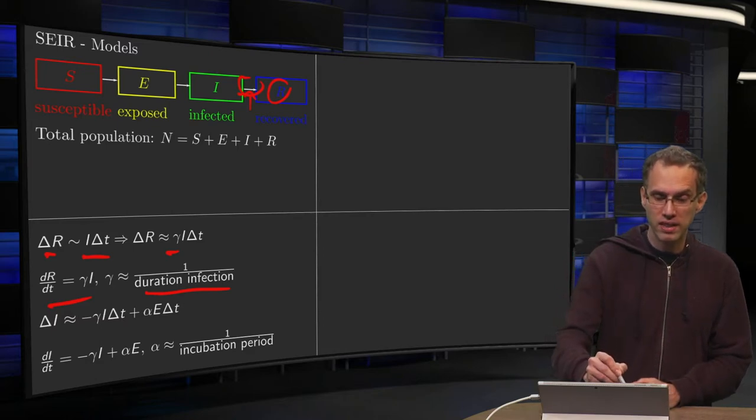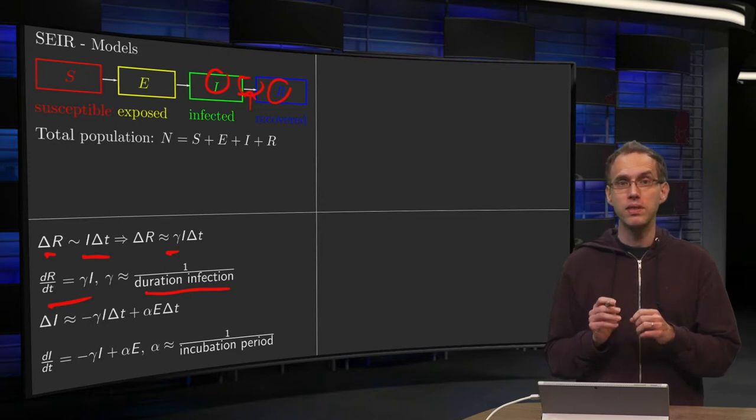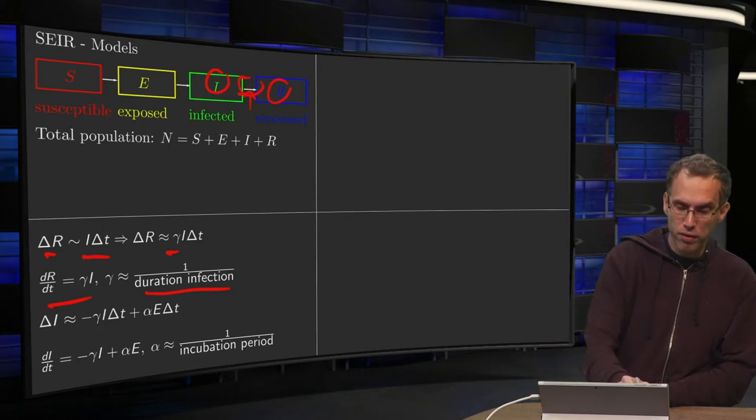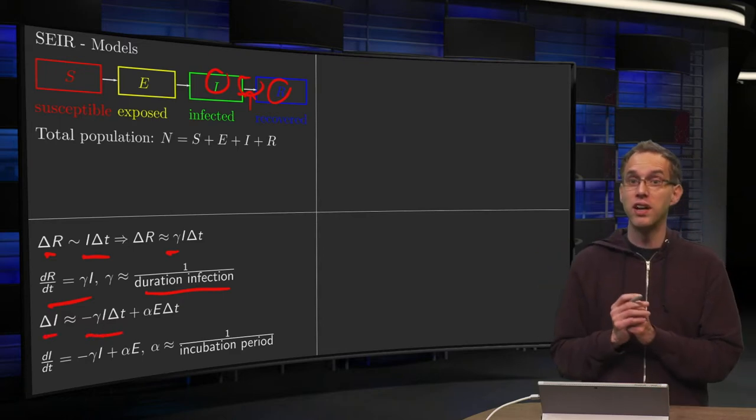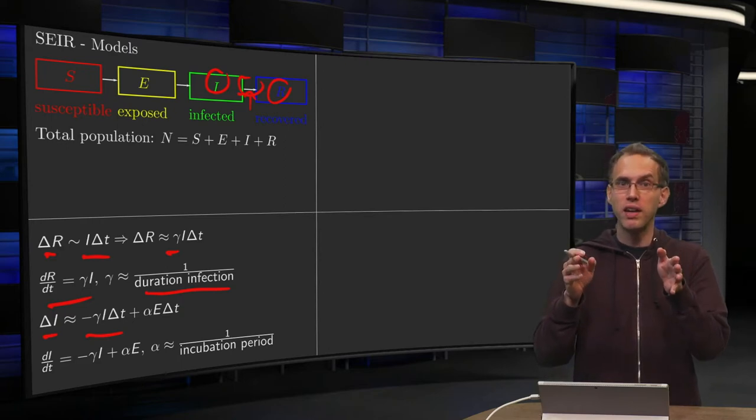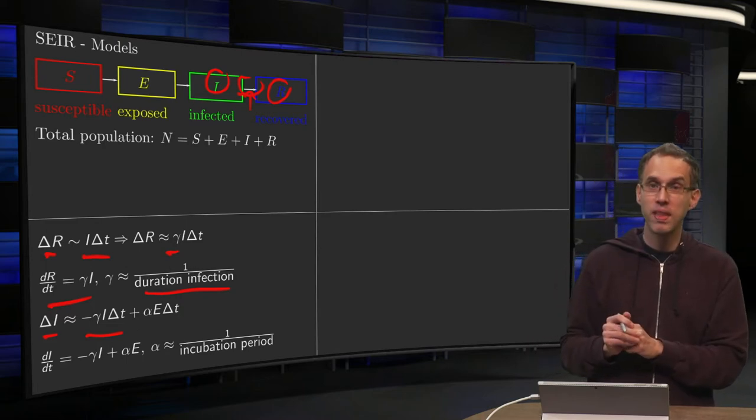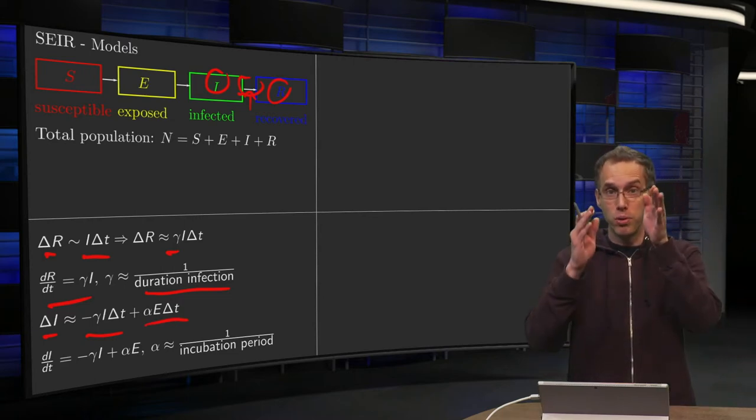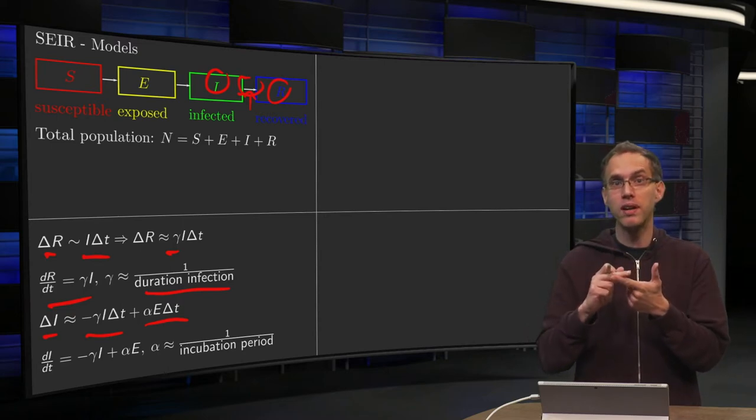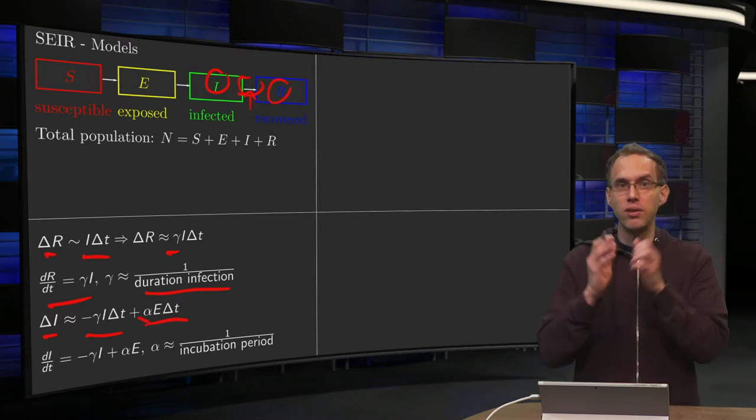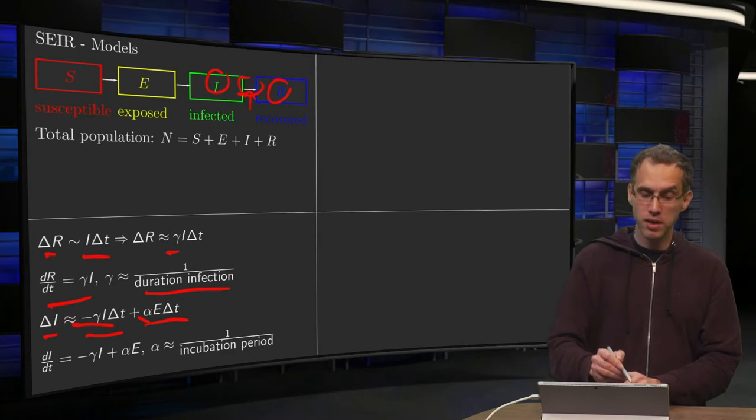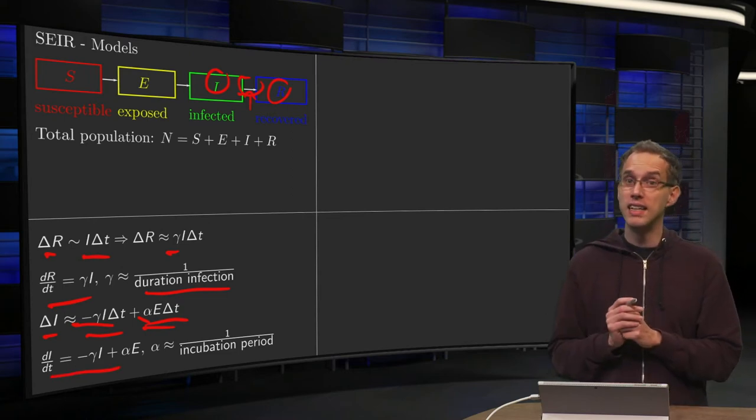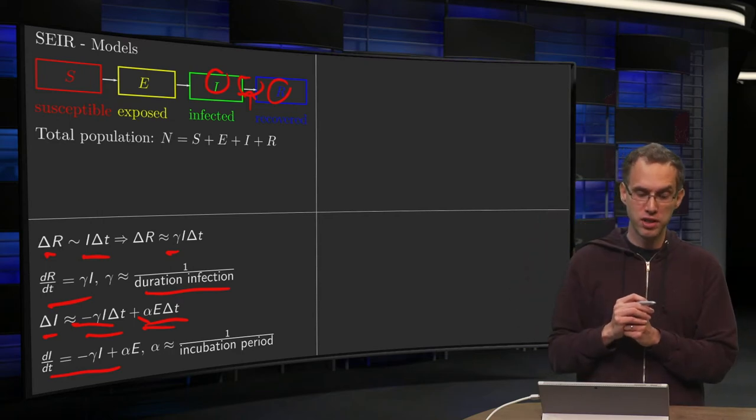So how many people do we get in the group I? Well you have inflow from E and outflow to R. So the outflow from I to R gives you a delta I with a minus sign: minus gamma times I times delta t. So that's to balance it. People going to R are leaving the group I. And then you have another group. How many people enter I? Well that is proportional to the number of people in group E and the time you're looking. And now we call this proportionality constant alpha. So delta I is approximately equal to minus gamma I times delta t plus alpha times E times delta t. Divide by delta t, take limits to zero, and we get a differential equation for dI/dt: minus gamma I to balance the plus gamma I for dR/dt, plus alpha times E.